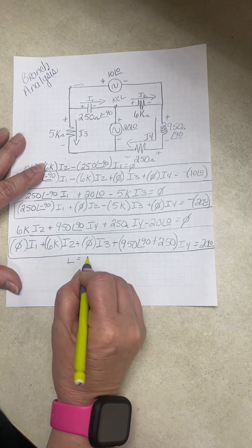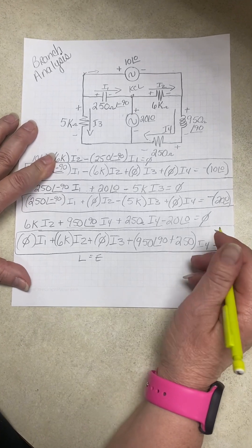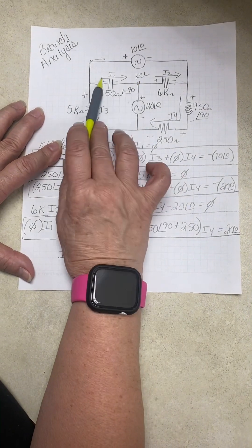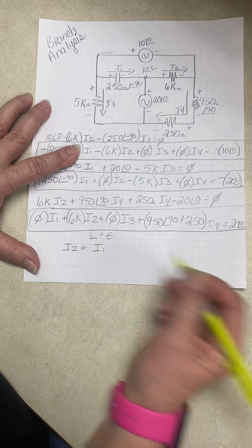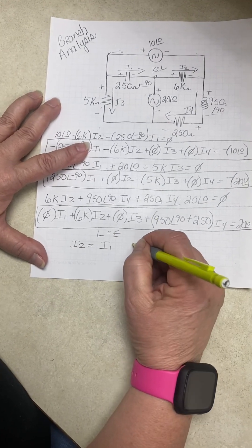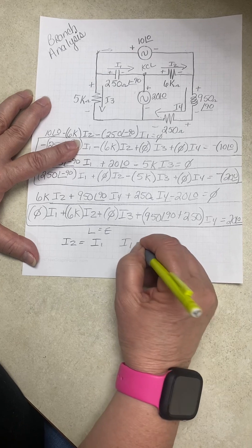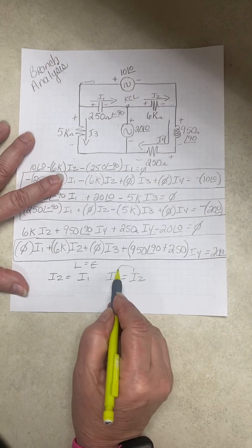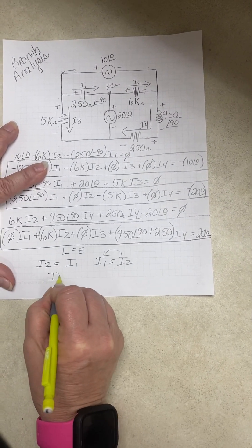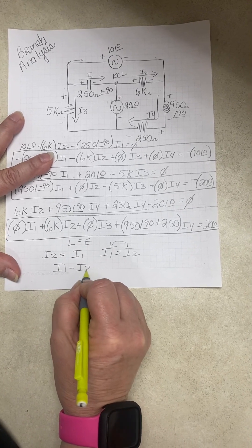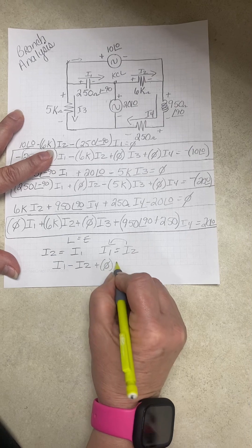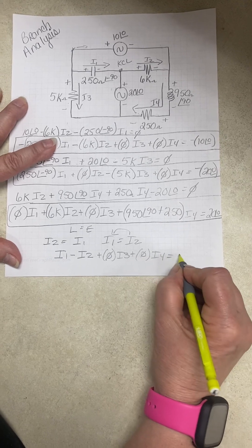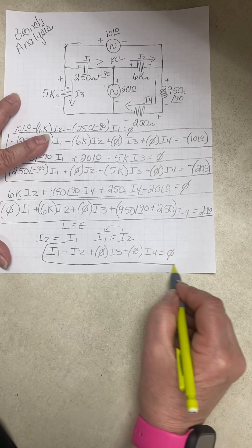And we always do leaving equals entering. So leaving this dot is I2. Entering this dot is I1. So if we just flip it, we have I1 equals I2. This has to go to that side. So our final equation will be I1 minus I2 plus 0 I3 plus 0 I4 equals 0. That's our fourth equation.